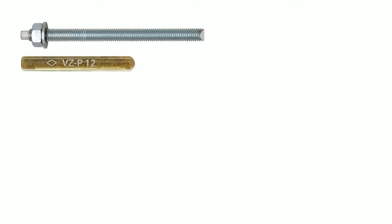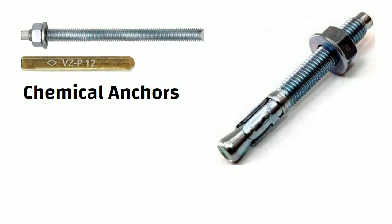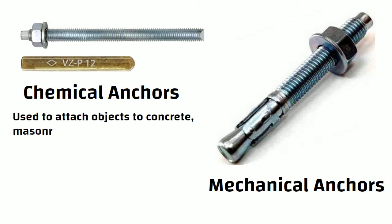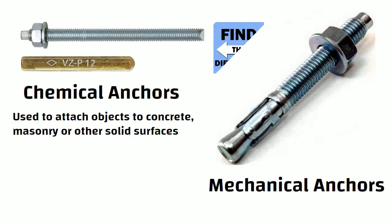Hello friends. Chemical anchors and mechanical anchors are two types of fasteners used to attach objects to concrete, masonry, or other solid surfaces. In this video, we will understand the differences between these two types of anchors.